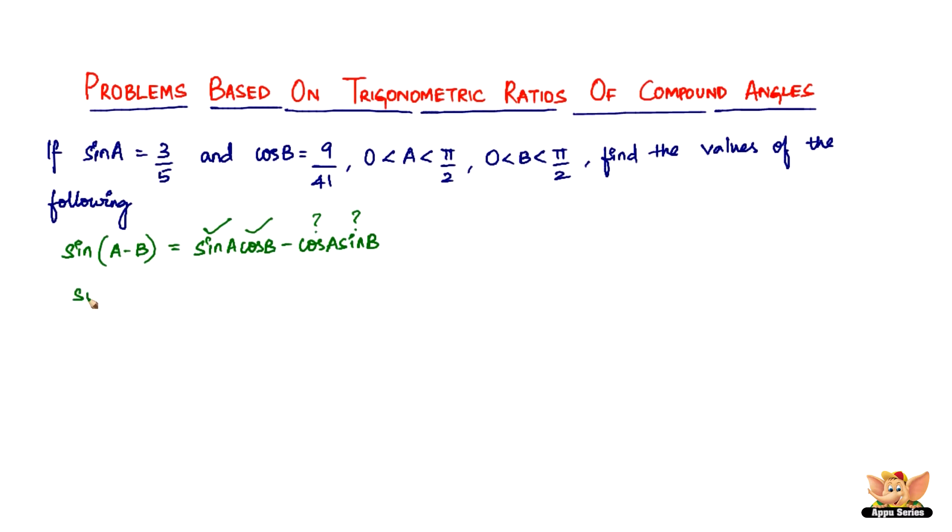So let's find that first. We have this formula: sin squared A plus cos squared A equals 1. Using that identity, let's find the value of cos A. Cos A is going to be square root of 1 minus sin squared A. Substituting the value of sin A, we have 1 minus 3 by 5 the whole squared, which gives us cos A equal to 4 by 5.